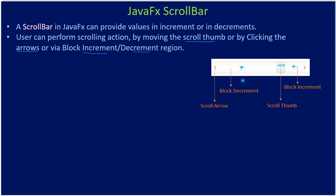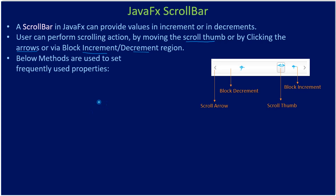There is also a way to produce events by clicking the block increment or decrement region based on the orientation. When you click there, the increment will be in blocks. Moving the thumb produces linear values; clicking the arrows also gives linear values; but clicking the block regions produces values in steps.